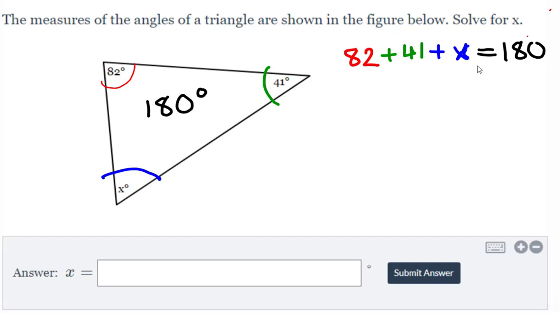And that's how you set up the equation. I'm going to go ahead and combine like terms. I'm going to add 82 and 41 together. And let's see, 80 and 40 is 120, and 2 plus 1 is 3,